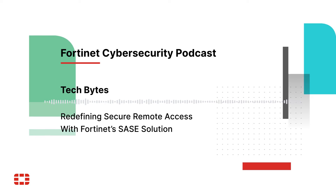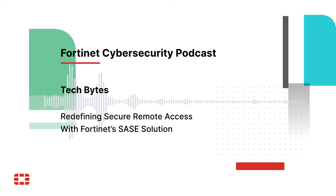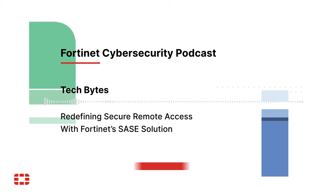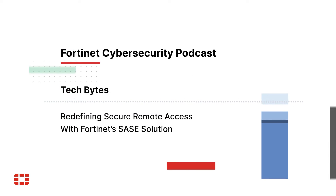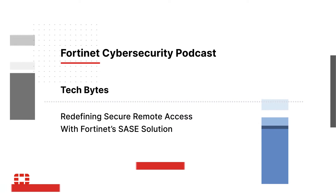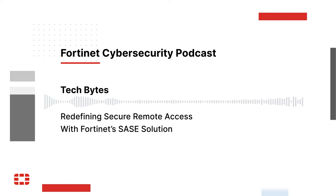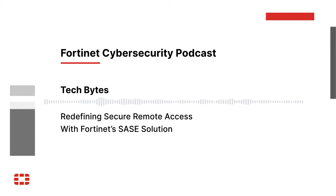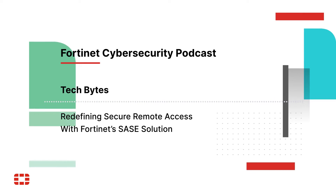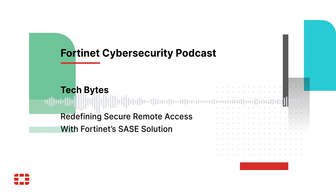Folks thinking about SASE need to know there is a client piece that goes on an end user's device. The FortiClient is an agent we have been developing — it used to be used for VPN. We made it very simple over the last four years where the same FortiClient agent can do VPN, ZTNA, as well as all SASE capabilities including CASB. The same unified agent allows you to make the journey from migrating from VPN to full-blown SASE functionality.